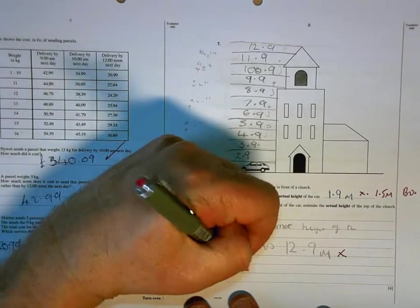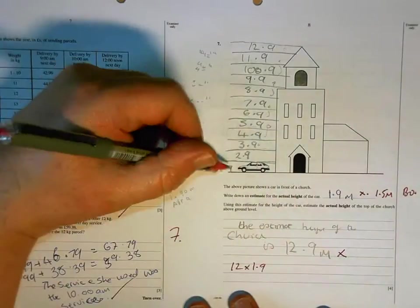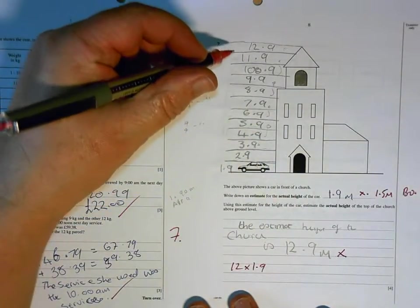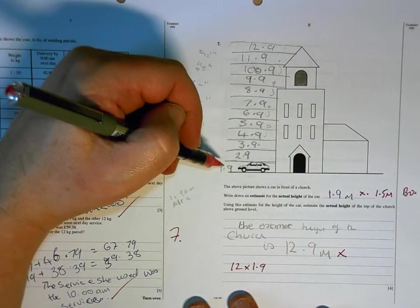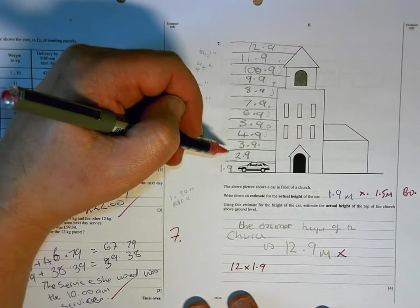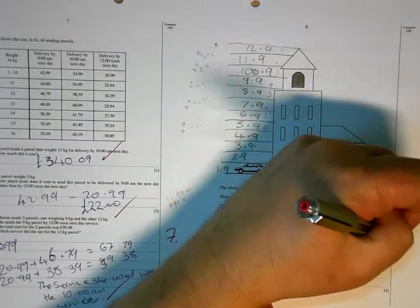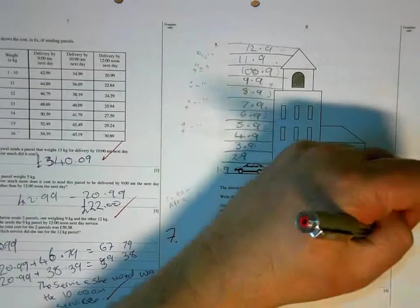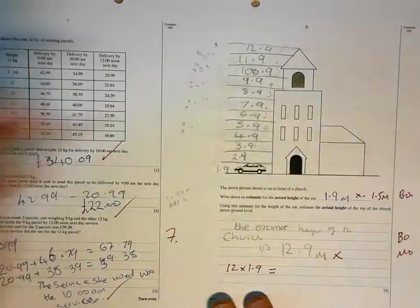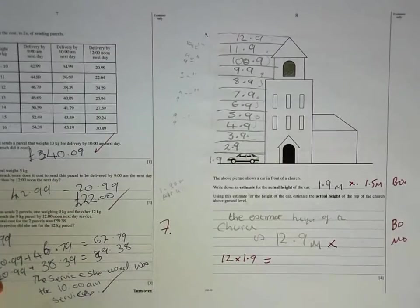What yours should be is 12 times 1.9. It's 12 gaps you've counted, each one of them 1.9. So you should be doubling and trebling and so on. So, I can't give you any marks of that, although you're not far off earning some marks.